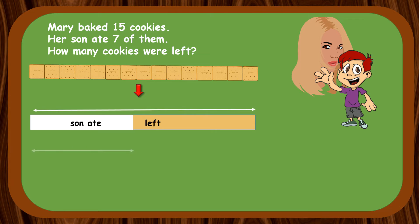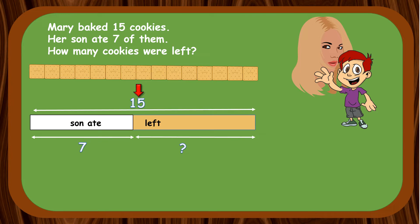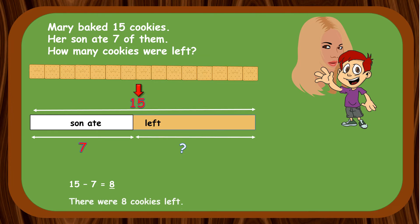There are a total of 15 cookies which Mary has baked. Seven of them are eaten by her son. From the diagram, to find the number of cookies left is to find the difference between the total number of cookies and the number of cookies that have been eaten. 15 minus 7 gives us 8. Therefore there were 8 cookies left.